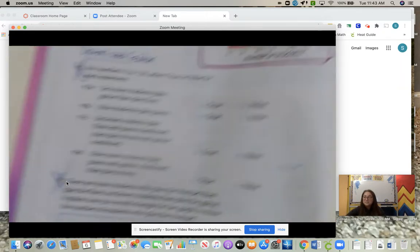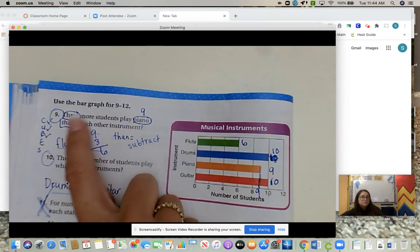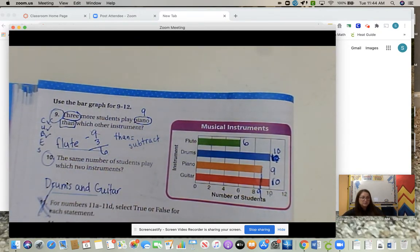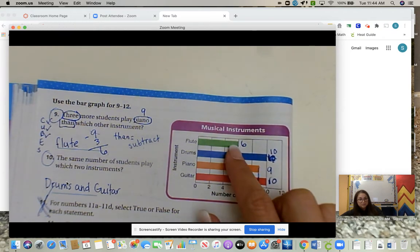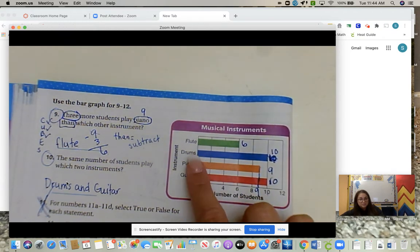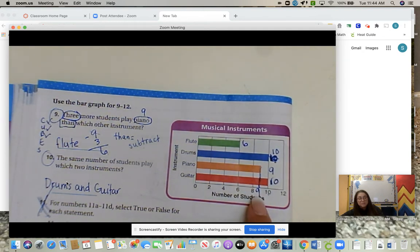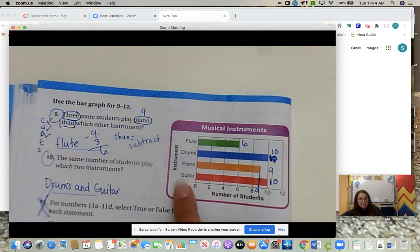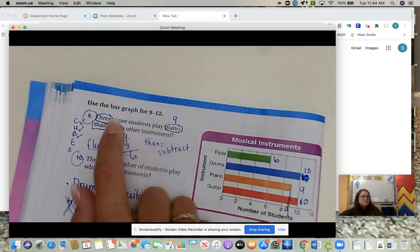Page 96 we did together. Only 9 and 10. So we're only doing 9 and 10. Use the bar graph for 9, 10. And then we're not going to do the rest. We need to label all our bars first. So the flute has 6. As you go to the end of the line, draw it down to 6. Drums go all the way over. Go down to 10. So 10. Piano. It's in between 8 and 9. But we know 9. I'm sorry, 8 and 10. We know 9 is in between 8 and 10. So 9. And guitar go all the way over to 10.